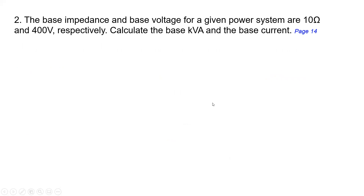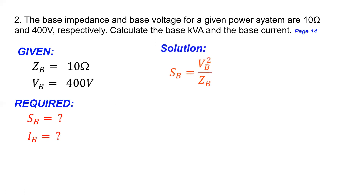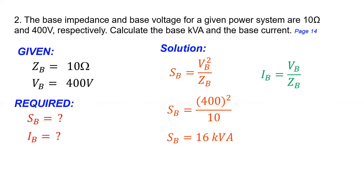Practice problem number two: the base impedance and base voltage for a given power system are 10 ohms and 400 volts respectively. Calculate the base KVA and the base current. Using the equations: base KVA equals V squared divided by base impedance — substituting 400 squared divided by 10 gives 16 KVA. For the base current, base voltage divided by base impedance gives 400 volts divided by 10 ohms, which equals 40 amperes.